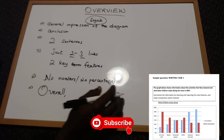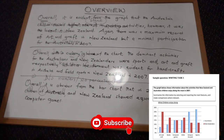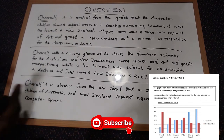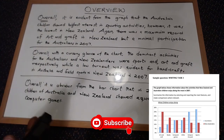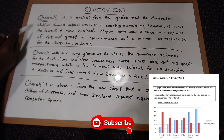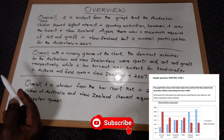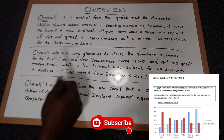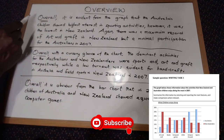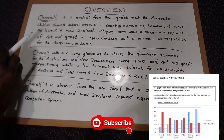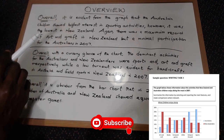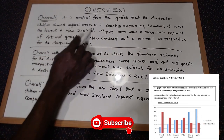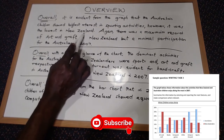Let's look at the diagram and see how to write an overview for the bar chart. I've got samples on the board. The first sample deals with talking about the highest and lowest interest. For example: 'Overall, it is evident from the graph that Australian children showed the highest interest in sporting activities; however, it was the lowest in New Zealand.'